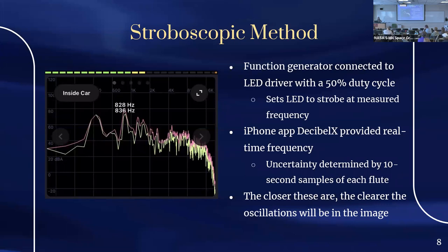We accomplished this using a function generator connected to the LED driver that was driving the fiber optics cable with the laser at a 50% duty cycle. This allowed us to set the LED to strobe at the measured frequency. We measured the frequency using the iPhone app Decibel X, which provided real-time frequency by just holding it next to the edge tone as air was being blown over it. This was the most uncertain part of the experiment, so we took about a 10-second sample for each flute to capture the range of frequency fluctuations. The closer the two frequencies are, the better the image will be.